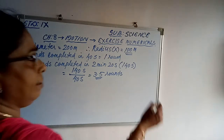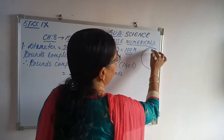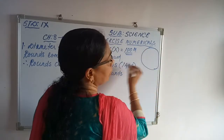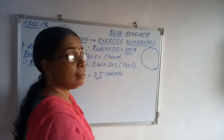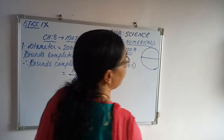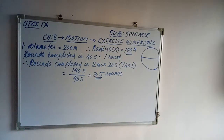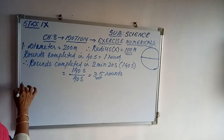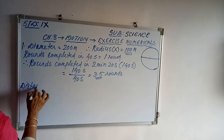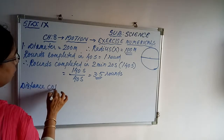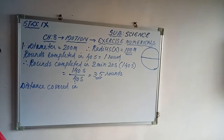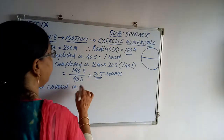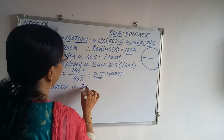As it is the circular track, the distance covered in one round will be the circumference. Distance covered in one round will be the circumference of the track, that is 2πR. So we can find out the distance covered in 3.5 rounds.